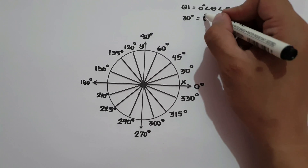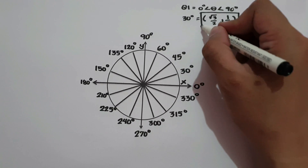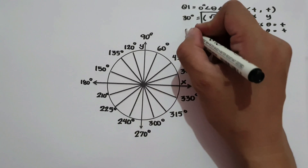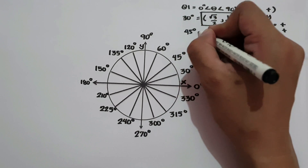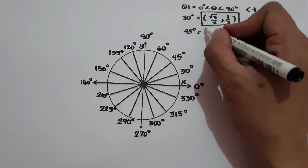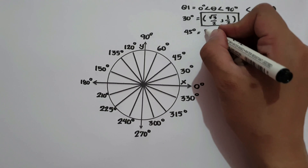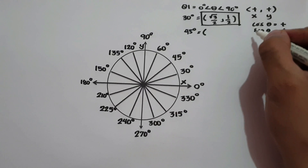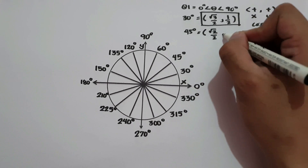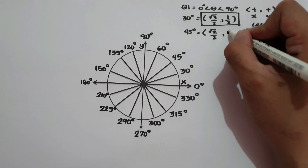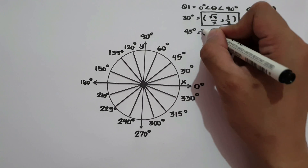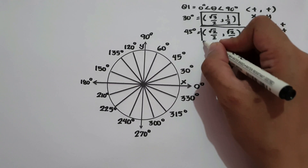Therefore, this will be the coordinates of 30 degrees. What about 45 degrees? It is located in quadrant 1, so let us identify the coordinates. Cosine 45 is square root of 2 over 2, and sine 45 is also square root of 2 over 2. This will be the coordinates of 45 degrees in quadrant 1.